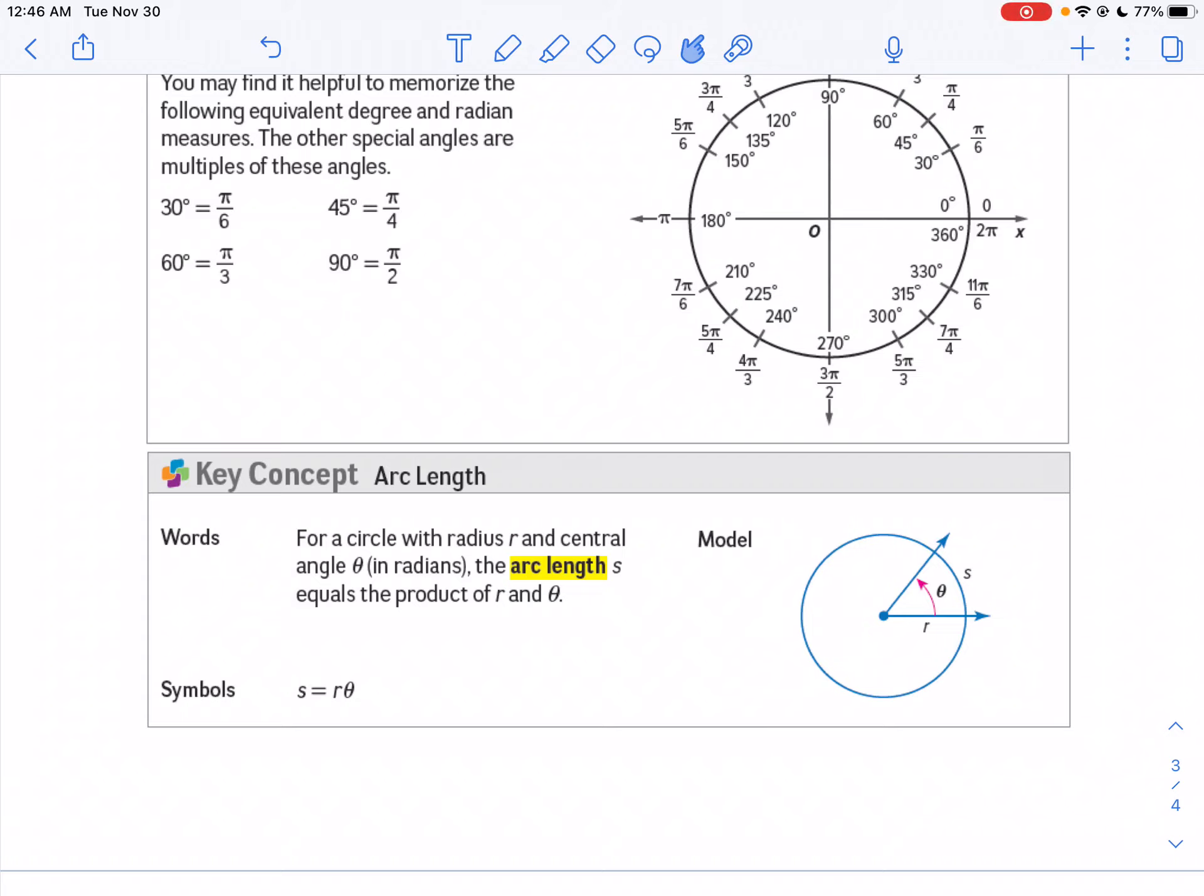If we have an angle measured in radians, the arc length, the part of the arc on the circle for that angle, is going to be S equals R times theta. So my arc length S is the radius times my angle in radians. That's the key.